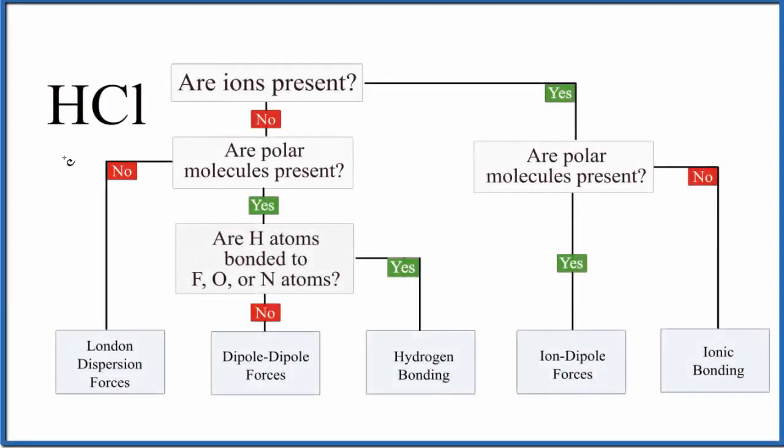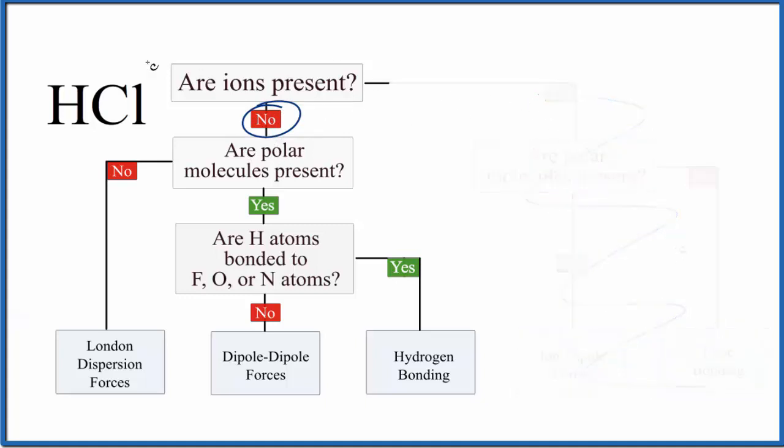Let's take a look at the intermolecular forces for HCl, hydrogen chloride. The first question we need to ask is: do we have ions present? Since this is a molecular compound and there's no negative or positive sign, we don't have any ions present, so let's just get rid of this part right here.